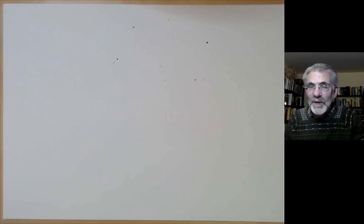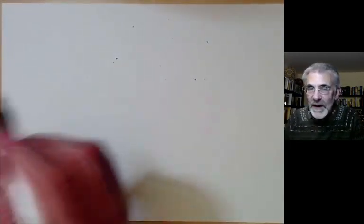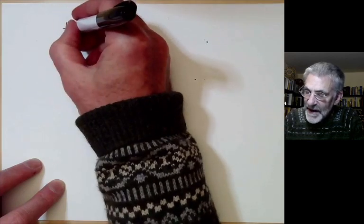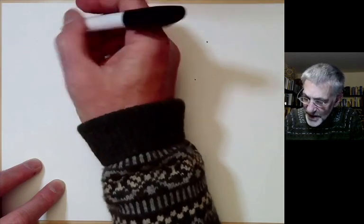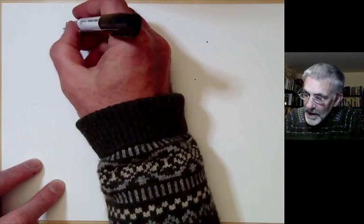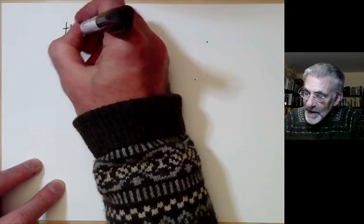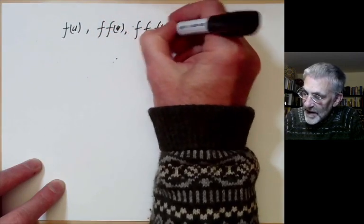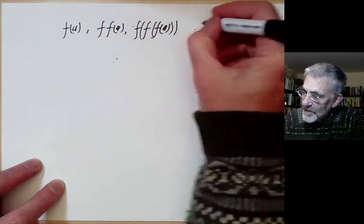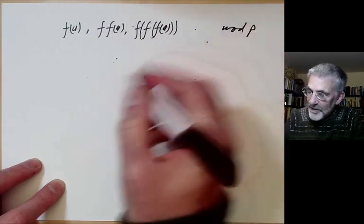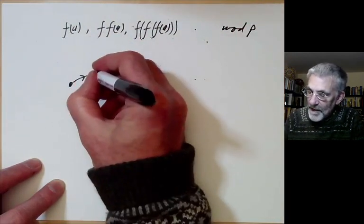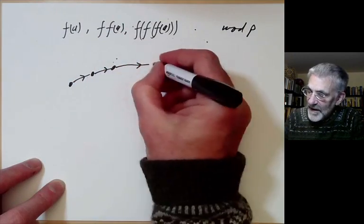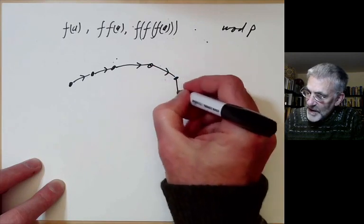By the way, why is it called the rho method? It's because of the following picture. Suppose you look at f of a, f of f of a, f f f of a, and you look at all these numbers modulo some prime p. What's going to happen is we're going to get f of a, f of f of a, and so on. And eventually, we will get a coincidence that two of them are equal mod p.